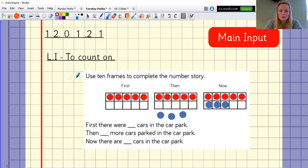So it says use tens frames to complete the number story. So we're going to be using number stories alongside a tens frame. So first there were cars in the car park. Now it says first here and it says first here. So this tens frame is representing first.